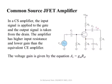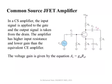Why do you call it common source? It's very simple — because for AC, the signal is applied directly to the gate while the source is grounded, and the output is taken between the drain and ground, which is also the source. So the source is common, because we apply the signal between the gate and the source, and we take the output from the drain and the source. The source here becomes grounded because this capacitor is effectively a short circuit.